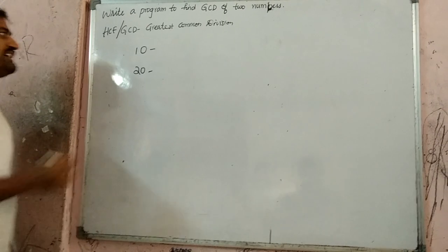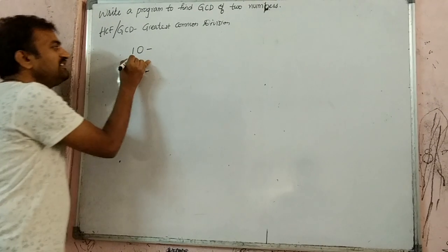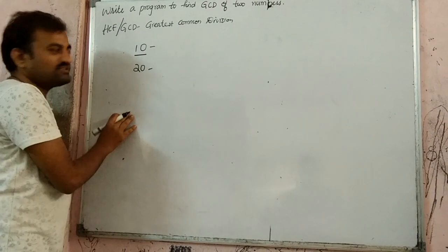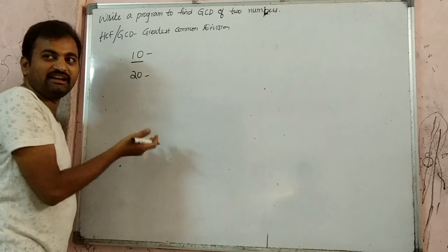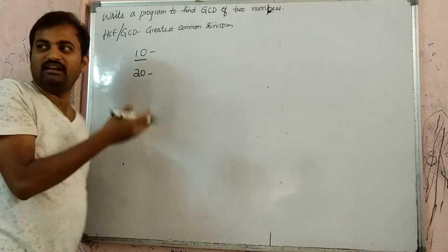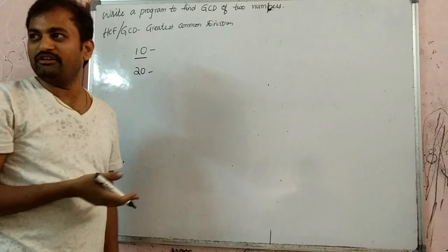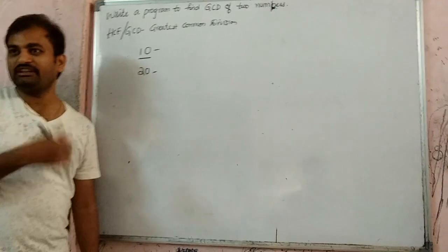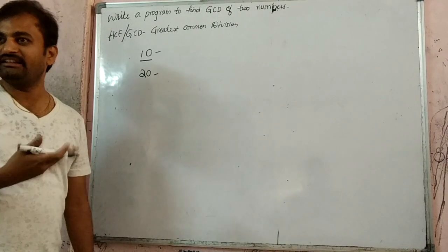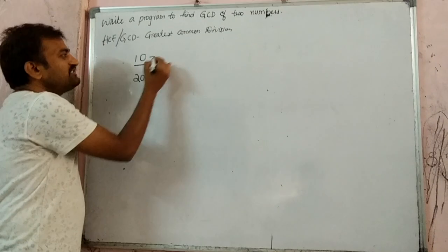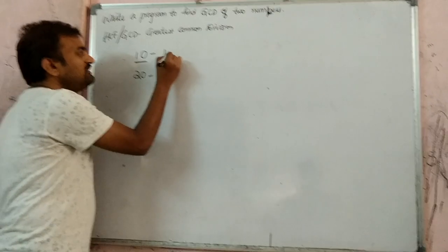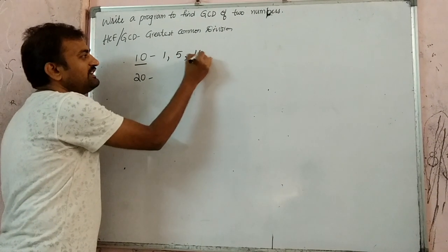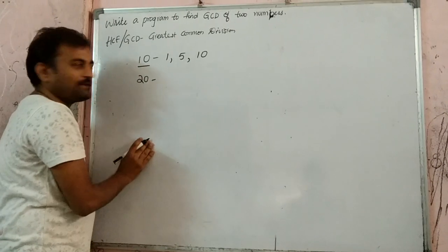So what we need to find is, we have to find what are the factors of 10. So how to find factors of 10? You know it, right? If number modulo i equals 0, then you will get the factors. So what are the factors of 10? 1, 2, 5, 10.